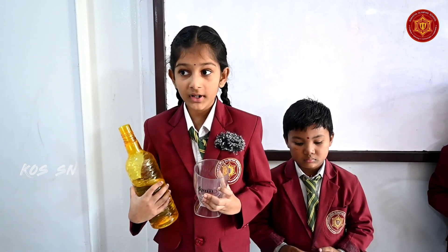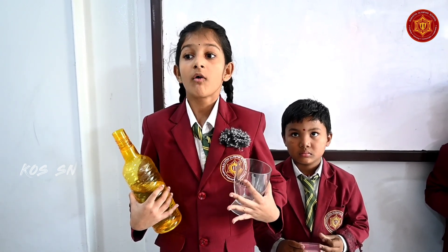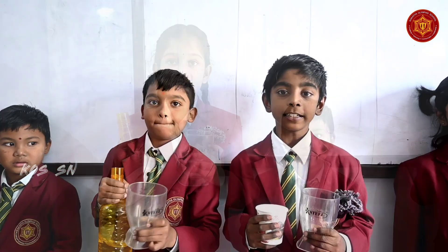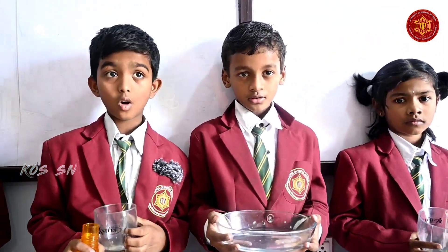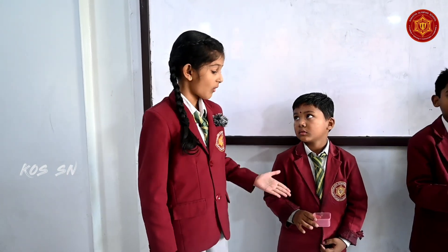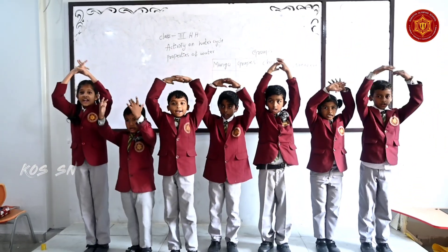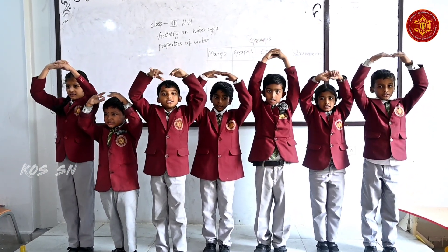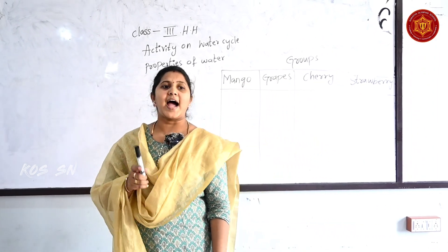Today we are explaining about the main properties of water. Water is colorless, water is shapeless. The three steps involving the water cycle are evaporation, condensation, and precipitation. Yes, children.